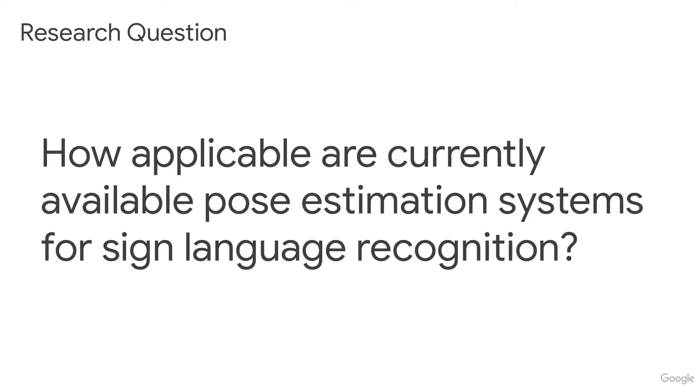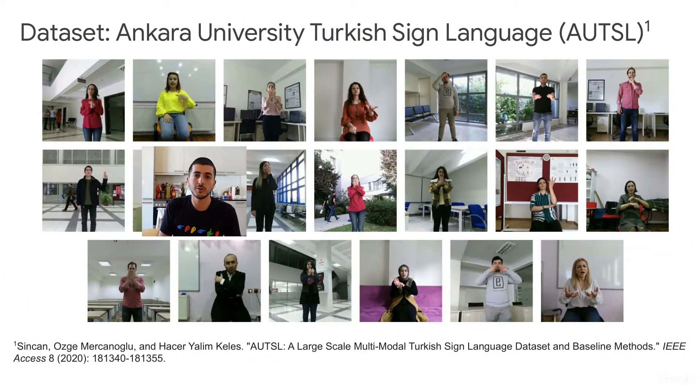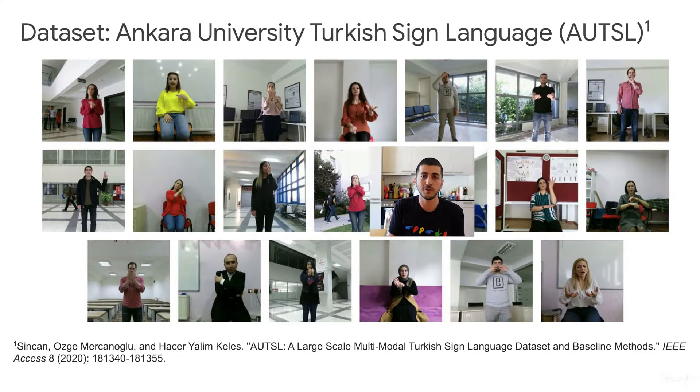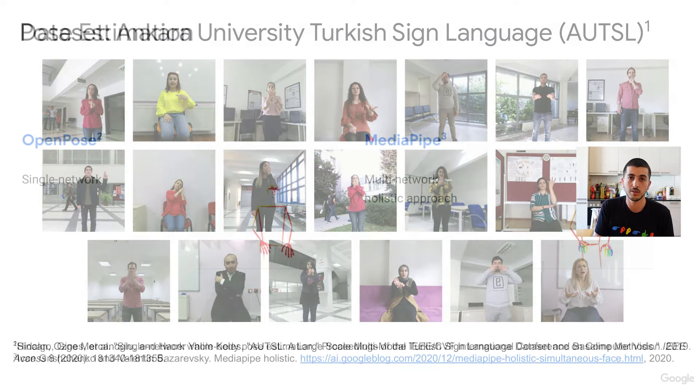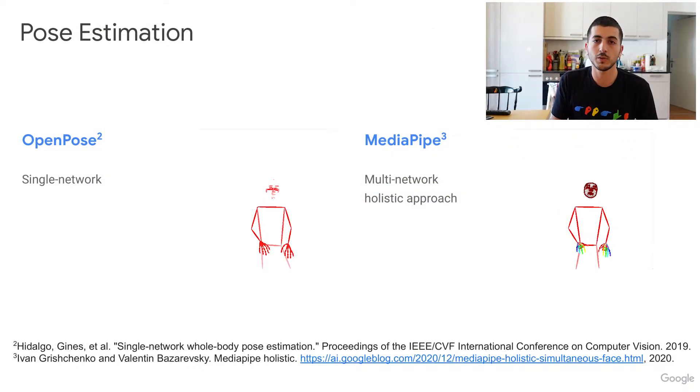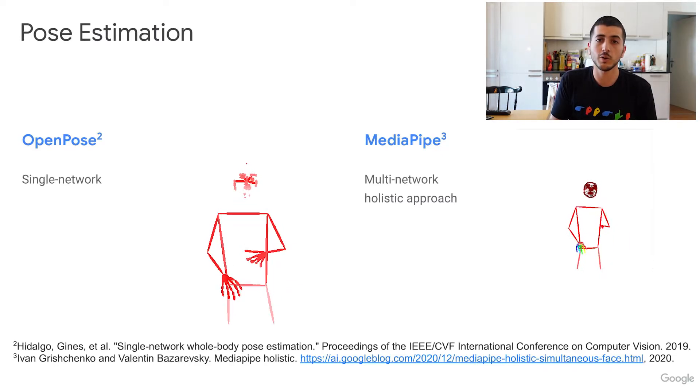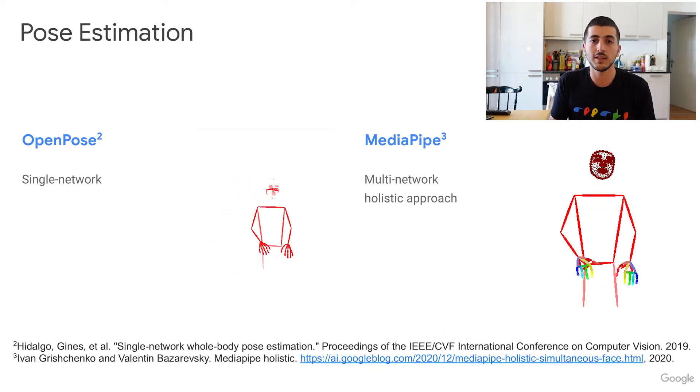How much information is lost by the skeletal estimation? To evaluate whether off-the-shelf pose estimation systems are applicable for sign language recognition, we participated in the CVPR 21 ChaLearn challenge for person-independent, isolated sign language recognition on the AUTSL dataset. This dataset contains over 200 signs signed by 43 participants of various signing levels on 20 different backgrounds. We process this dataset using two pose estimation tools: OpenPose single network whole body pose estimation and MediaPipe Holistic.